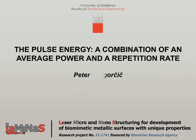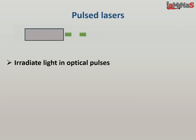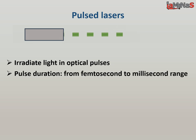The pulse energy is a combination of average power and repetition rate. Pulsed lasers irradiate light in optical pulses. The pulse duration depends on the type of laser and can go from several femtoseconds to several milliseconds.